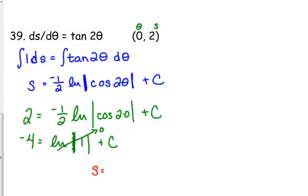Our particular solution is s is equal to negative one half natural log of the absolute value of cosine of 2 theta minus 4.